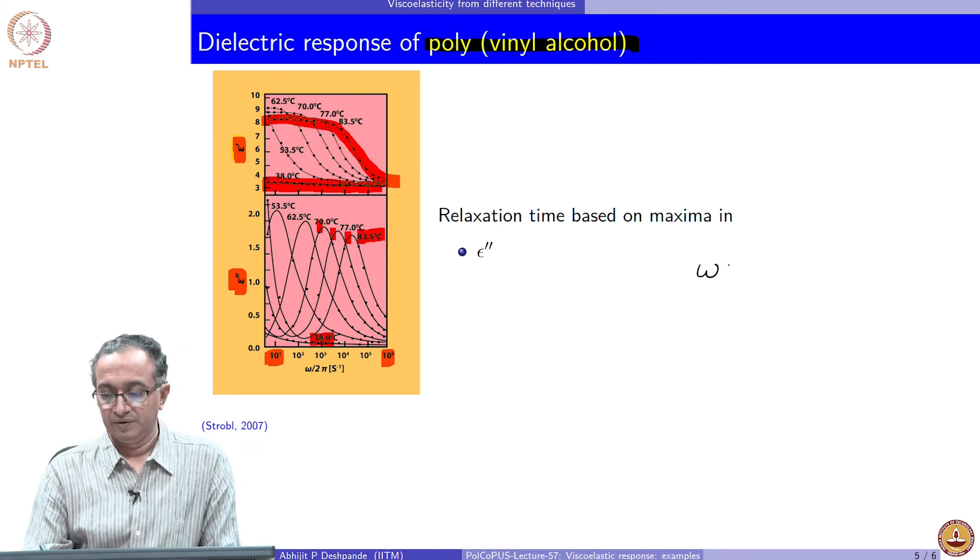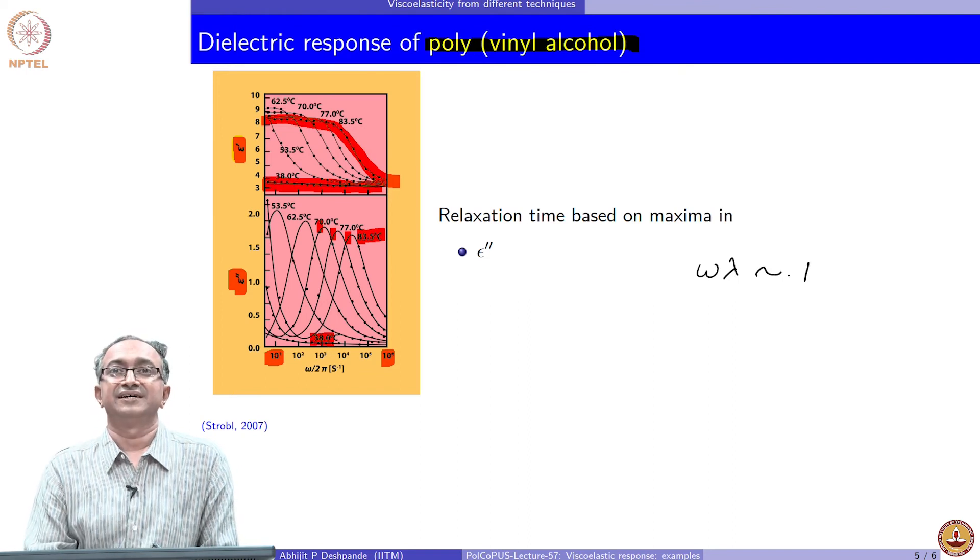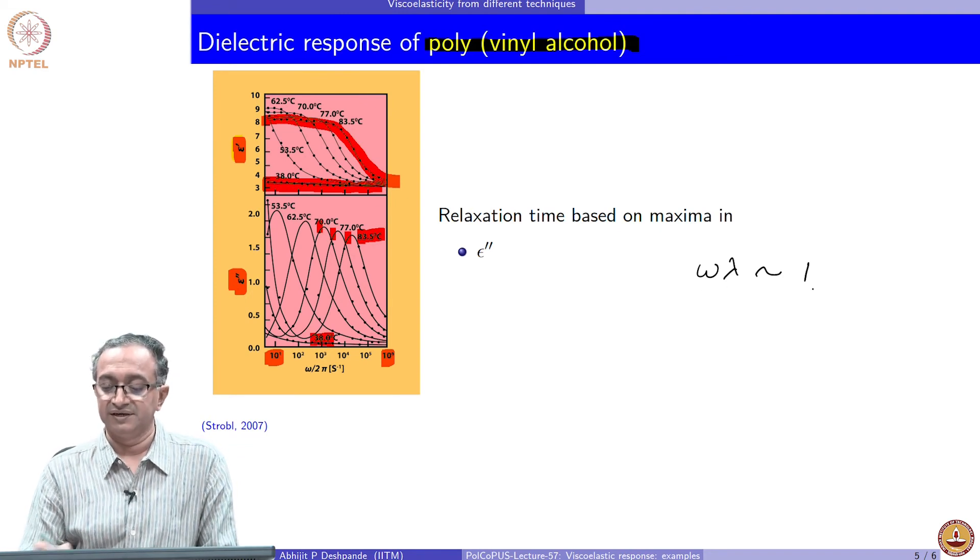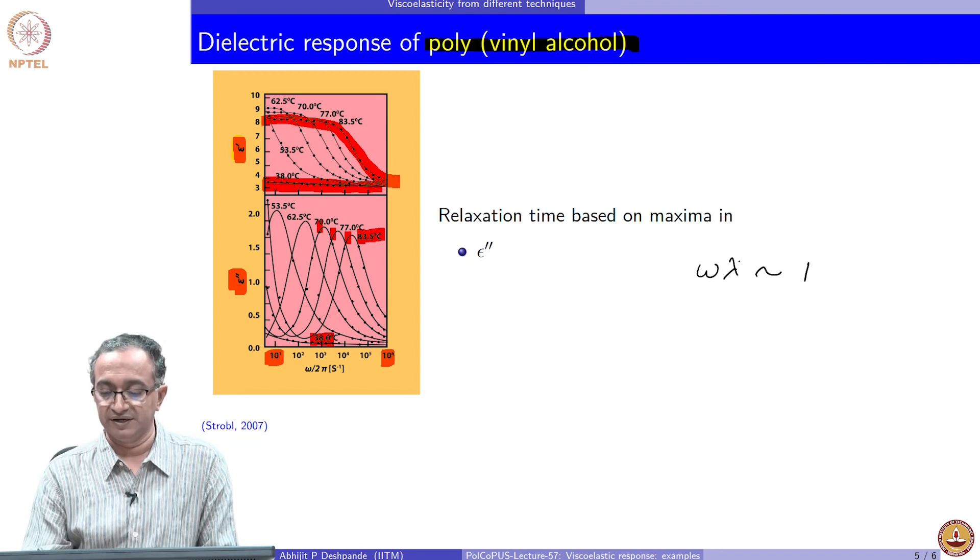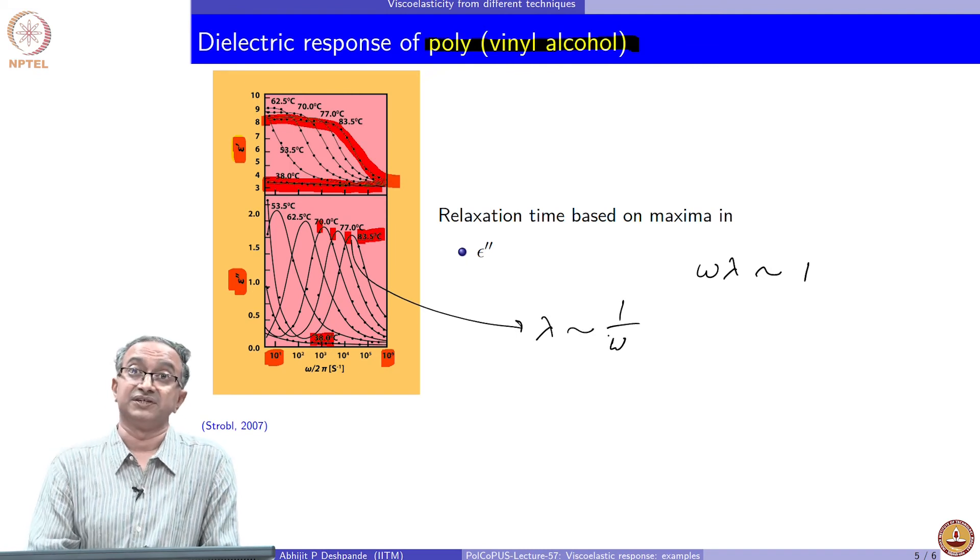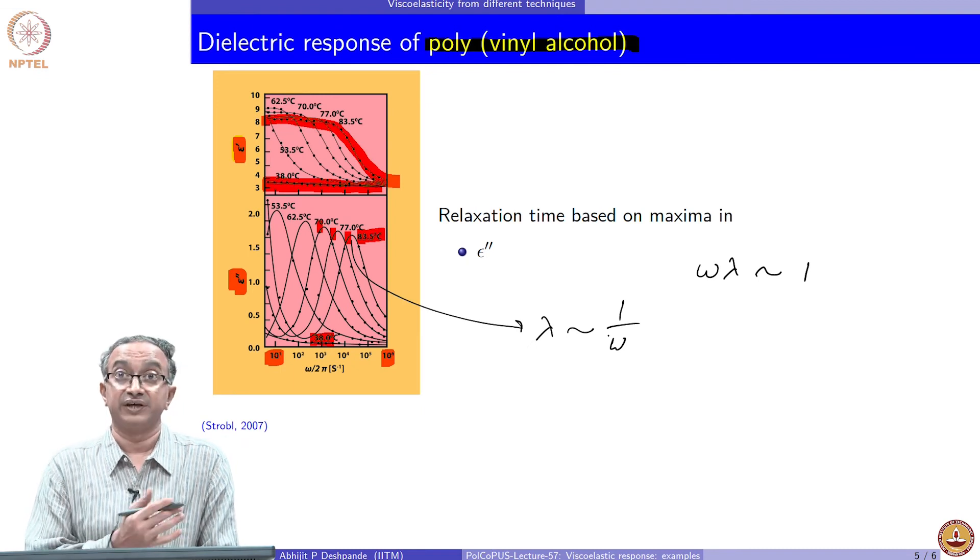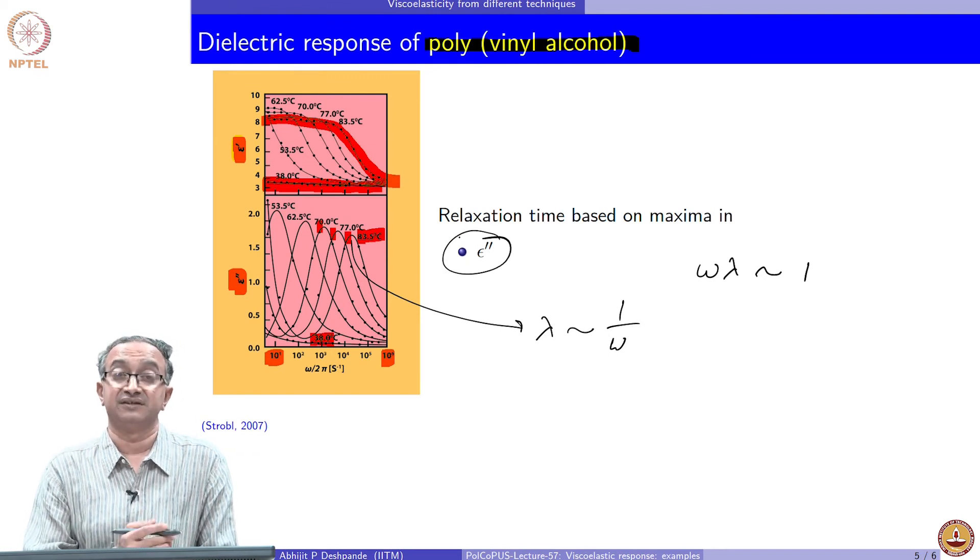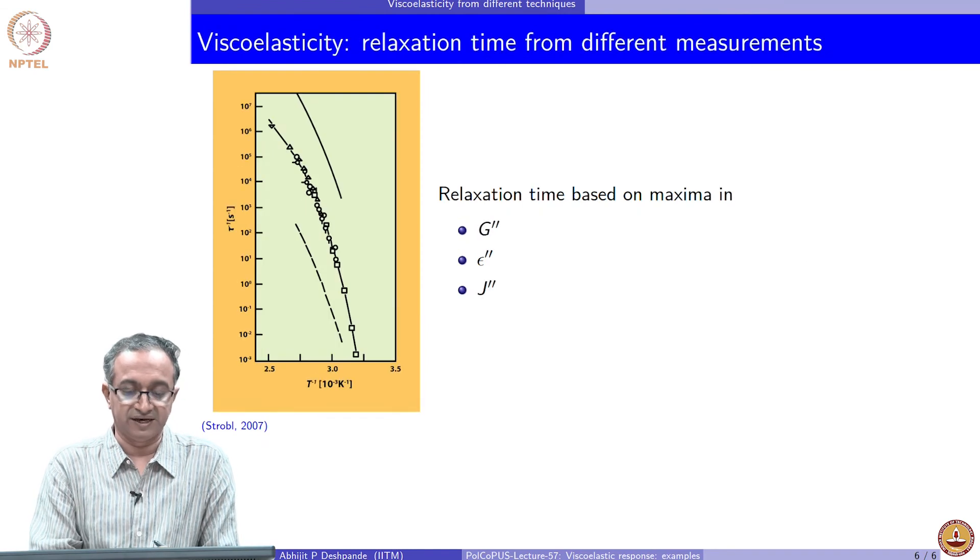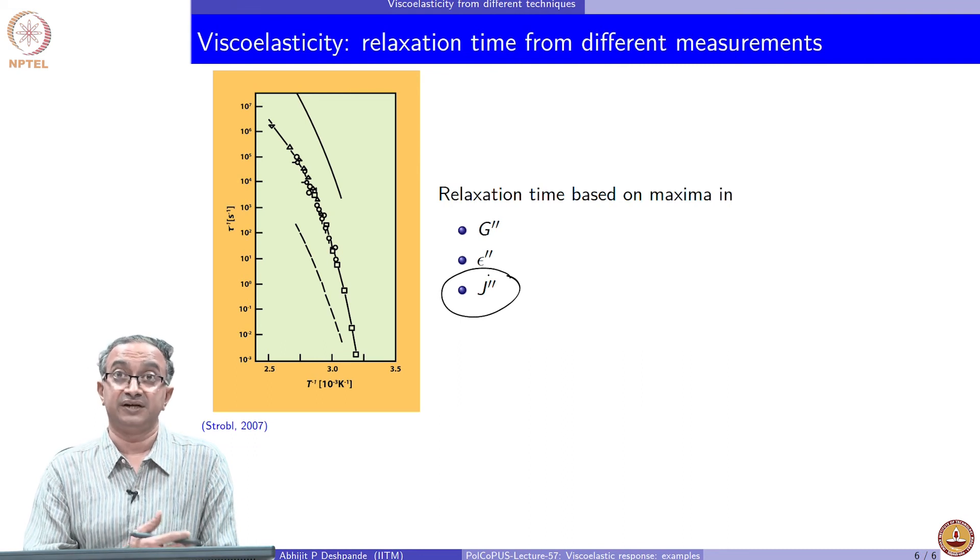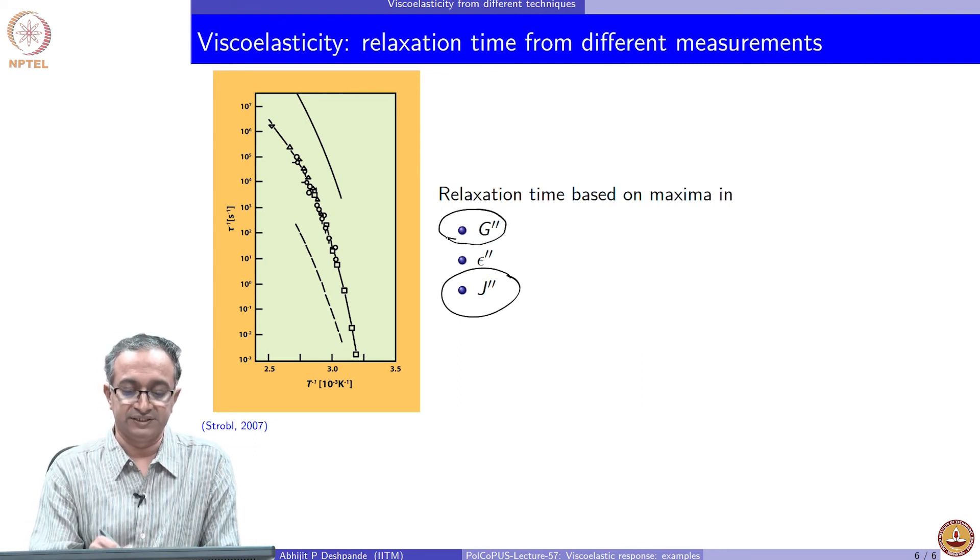So you can recognize that we discussed this during even Maxwell model response that frequency at which you observe the peak is usually where omega lambda is 1. So this peak frequency is where lambda can be estimated as inverse of this frequency. So based on this, we can calculate or estimate relaxation times in the material. And in this case, since there is a maximum in dielectric loss, we can get the relaxation times.